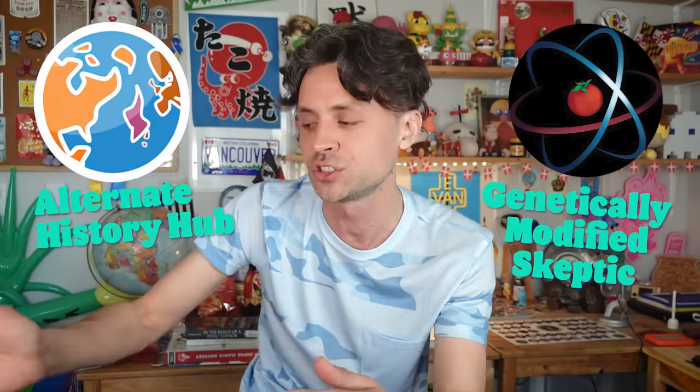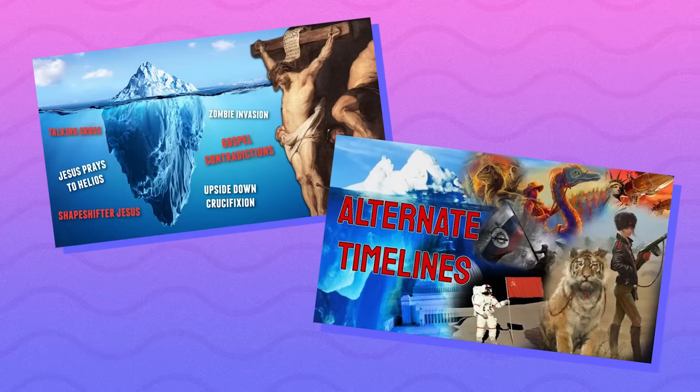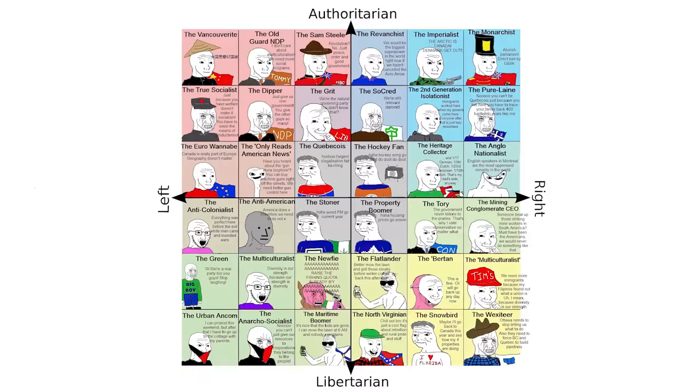Two of my most favorite YouTubers, Alternate History Hub and Genetically Modified Skeptic, have churned out a couple of these types of videos recently, and I must say it's made me a bit jealous because unfortunately I have yet to come across any iceberg memes relevant to my areas of expertise. However, I have found the next best thing: this very complicated political compass meme about Canadian politics.